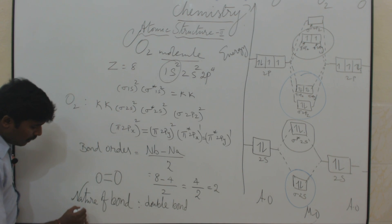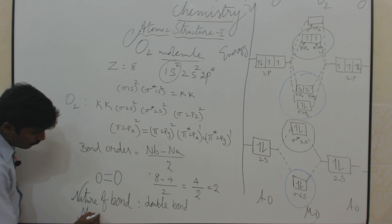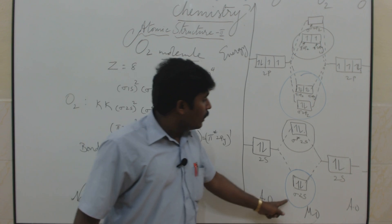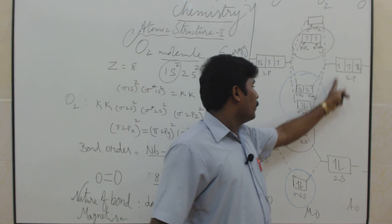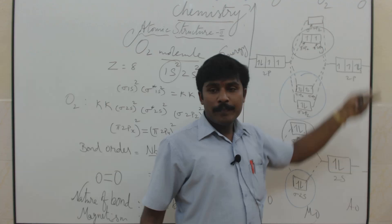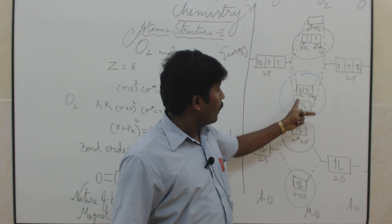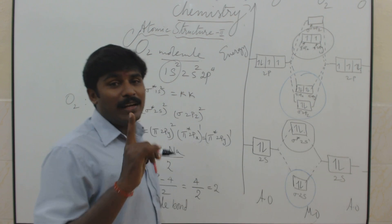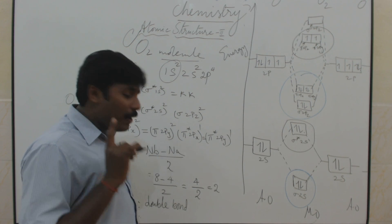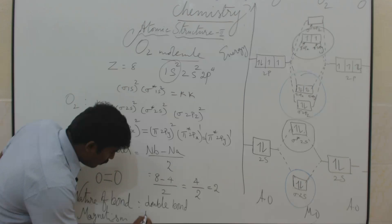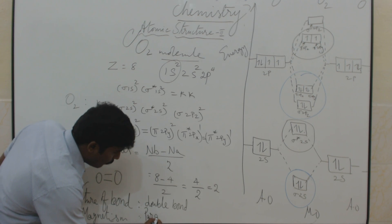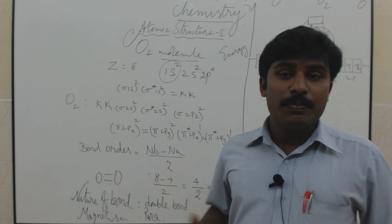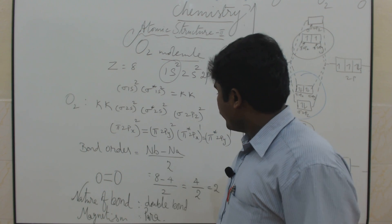What about the magnetic character? See here — check whether all electrons are paired or unpaired. Paired, paired, paired, paired, paired — but here there is an unpaired electron. Since an unpaired electron is present, this indicates paramagnetism. Unlike nitrogen which is diamagnetic because everything is paired, oxygen here is paramagnetic.